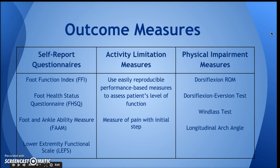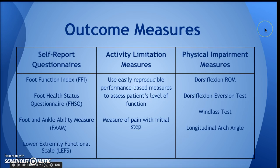Some of the outcome measures that you can use in clinic are self-report questionnaires, activity limitation measures, and physical impairment measures. Physical impairment measures are things we can measure in clinic as PTs — for example, dorsiflexion range of motion and the dorsiflexion eversion test. Activity limitation measures are easily reproducible performance-based measures that assess the patient's level of function; these can also relate to physical or participation restrictions. Some of the self-report questionnaires are the FFI, FHSQ, FAAM, and LEFS — different options depending on patient presentation and what is most appropriate.